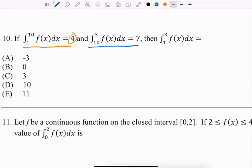We get 7, so what would 1 to 3 be? Okay, so I'm going to use an x-axis here to kind of help us along. So 1 to 10, whatever that answer might be, is 4.